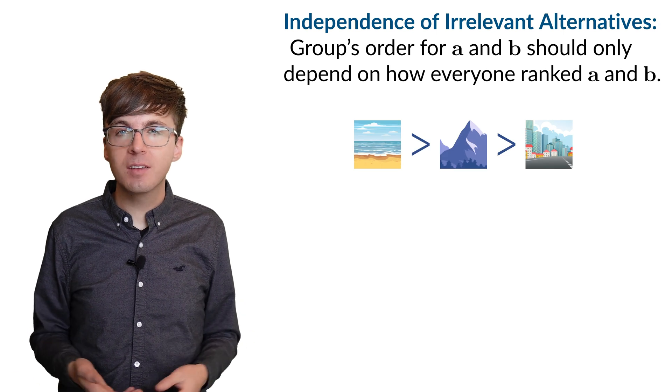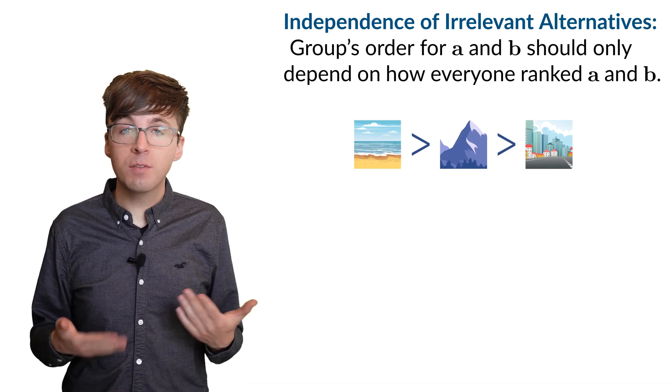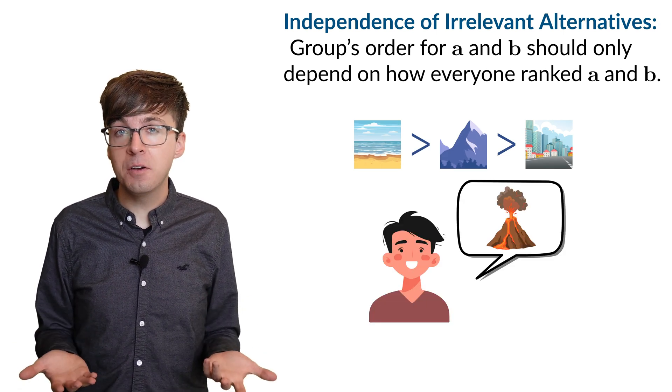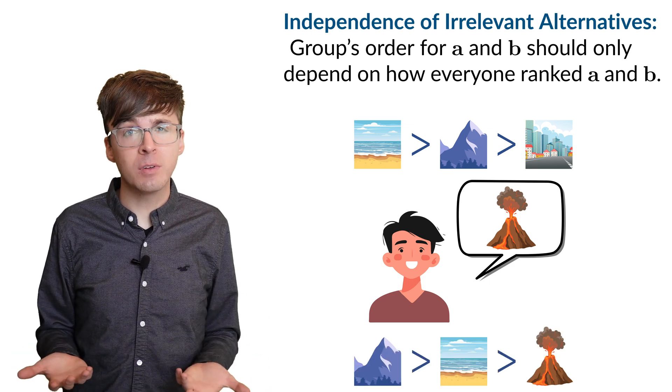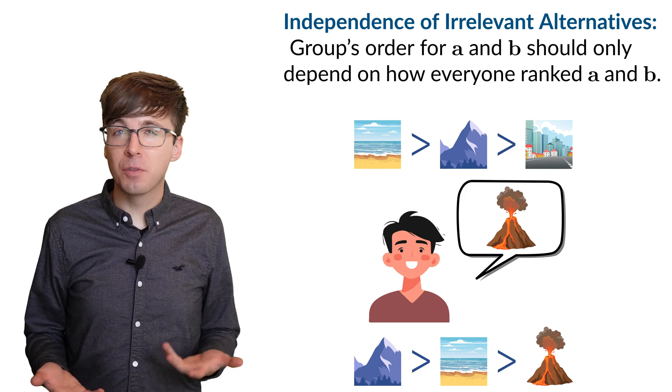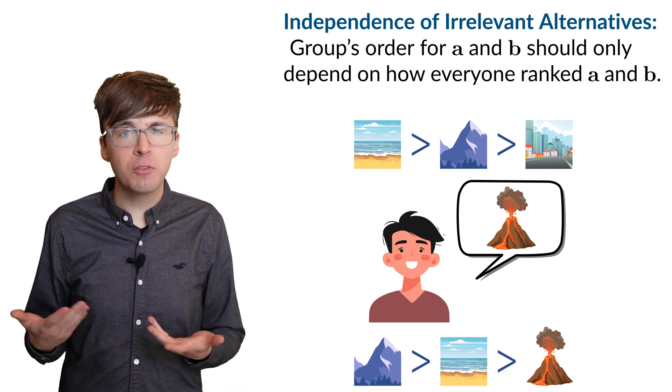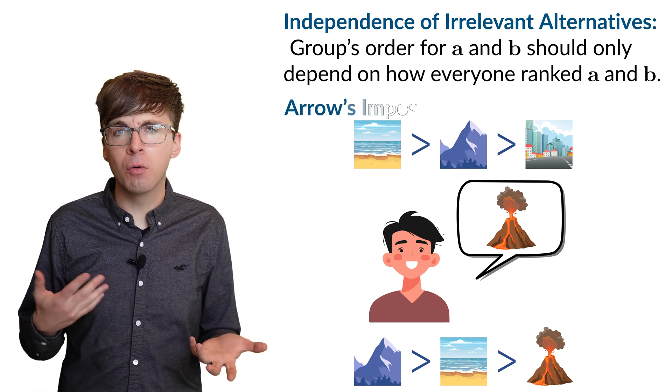It's like if the group decides to go to the beach, but when one of them suggests climbing a volcano as a possibility, suddenly everyone agrees to go to the mountains. It doesn't make sense for the new volcano option to switch the group's preference for the beach over the mountains.